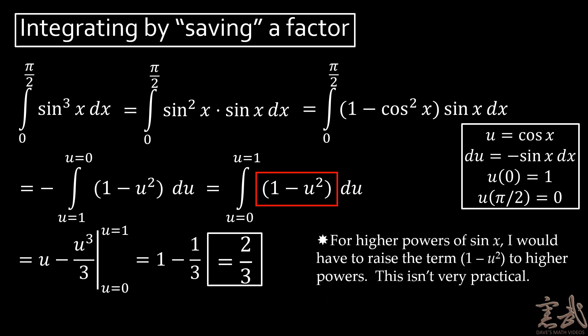The problem with this kind of brute force approach is that for higher powers of sine of x, I would have to raise the term 1 minus u² to higher powers. For example, if I had sine of x to the fifth power, this 1 minus u² would have to be squared — I would then have to expand it and evaluate more integrals. Needless to say, this isn't very practical. Therefore, we are going to seek a slightly more clever approach to this problem.